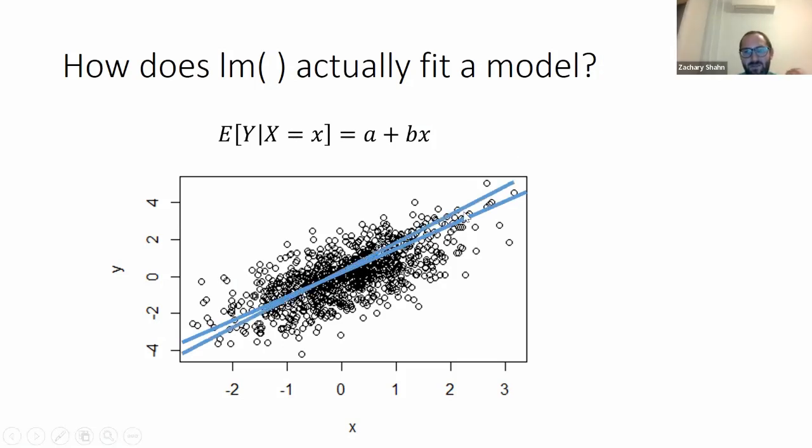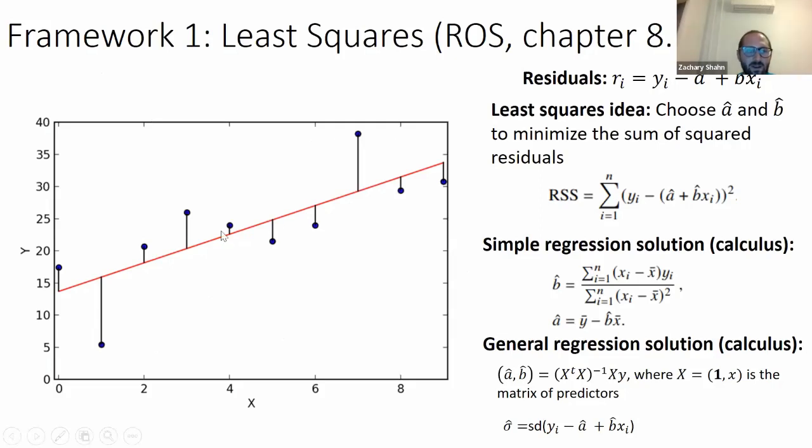This looks like a reasonable line. Maybe this looks reasonable. How do you know what a and b should be to give you the average value of y for each value of x? Each value of a and b leads to a different line. There are two ways of arriving at a guess for a line. One framework is called least squares, and regression and other stories talks about this in chapter 8.1. Here we have our picture with our x, y points being these blue dots.